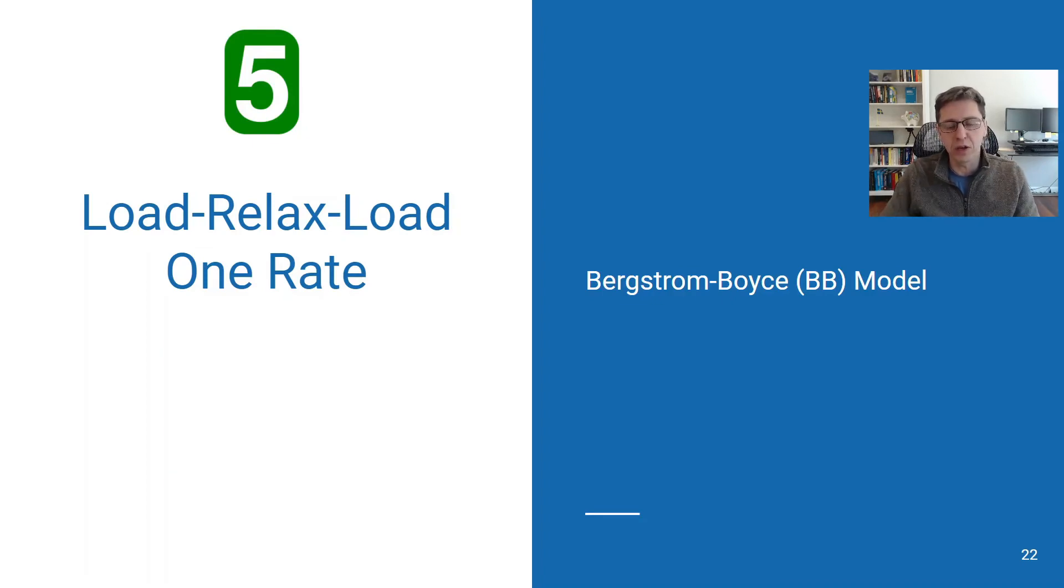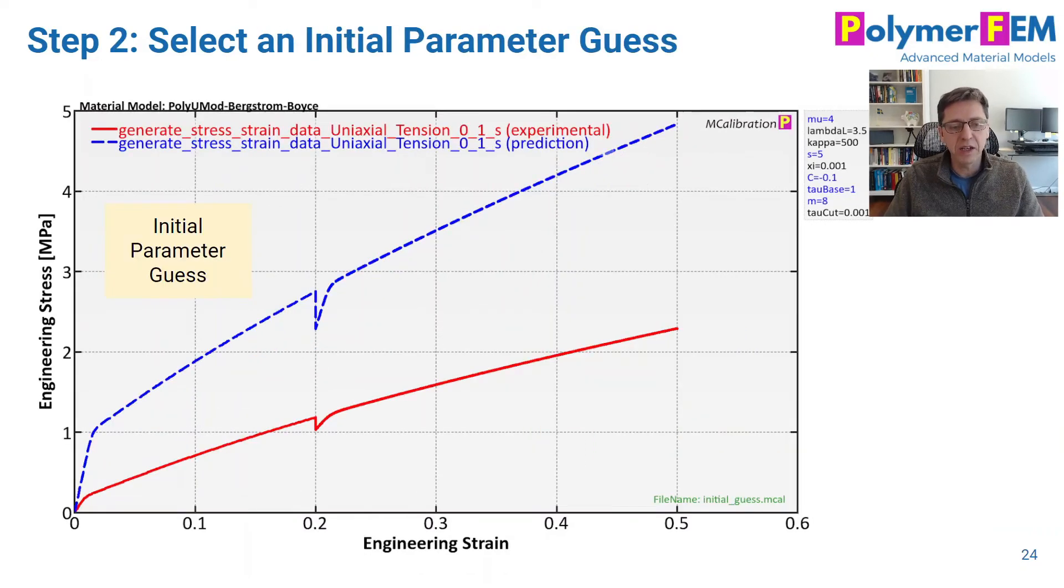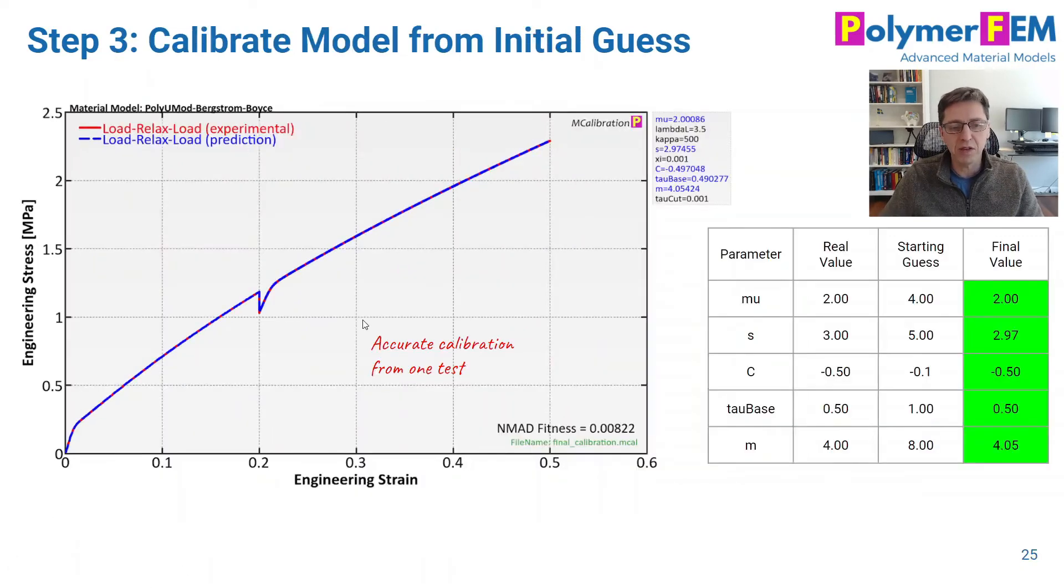How about if we do load, relax, and then continue loading? So here's an example. There's no unloading. I load it to 20% strain, hold it for 30 seconds, and then keep loading it up to this point. So now we have some relaxation data. Is this good enough for calibrating this material model? So here's the experimental data that I generate. Here's the initial guess in the dashed line. If I calibrate this case, I get a very good fit to the data, which we tend to get, right?